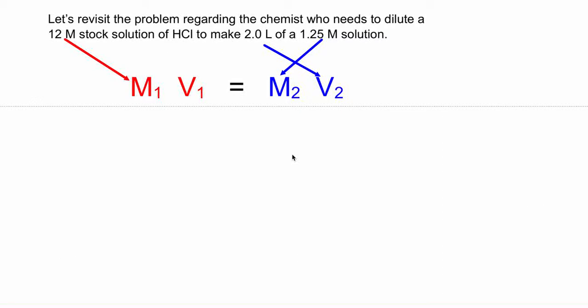Here we have a dilution problem. We have a 12 molar stock solution of hydrochloric acid and we want to dilute that to make a 1.25 molar solution of hydrochloric acid. We also want our final volume to be 2.0 liters.